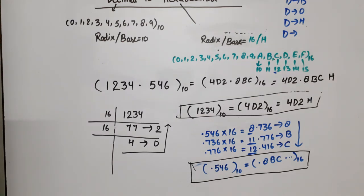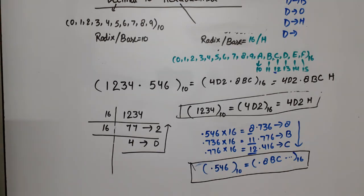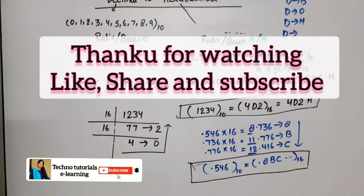To summarize: if you want to convert a decimal number to any base, divide the integer part by the radix of that base, and multiply the fraction part by that radix. This works for decimal to binary, decimal to octal, and decimal to hexadecimal. Thank you for watching — if you have any doubts, please write in the comment section.